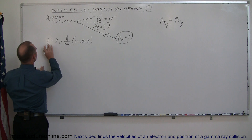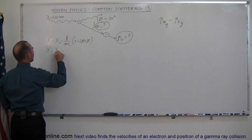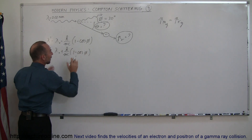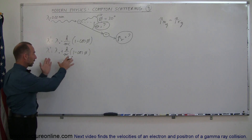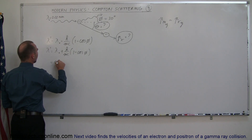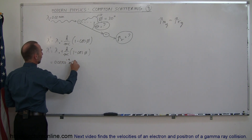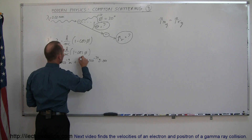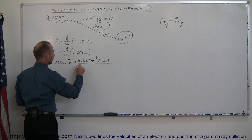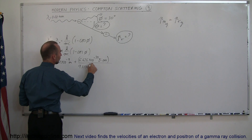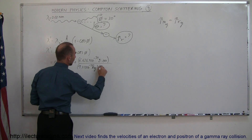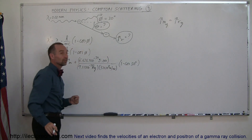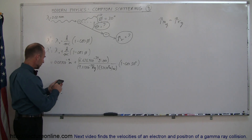The first step should be straightforward. Let's find the new wavelength of the scattered photon. It would be equal to the original wavelength plus h over mc times one minus the cosine of phi. This by now, if you've watched the video, should be familiar to you. Let's plug in the numbers, assuming that the original wavelength was 0.02 times 10 to the minus 9 meters, plus h which is 6.626 times 10 to the minus 34 joule-seconds, divided by the mass — 9.11 times 10 to the minus 31 kilograms — times the speed of light, times 1 minus the cosine of the scatter angle, which we assume to be 30 degrees in this case.